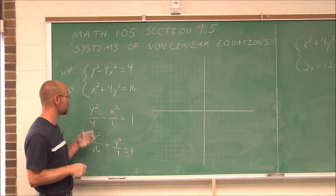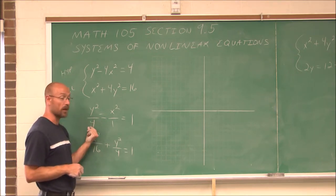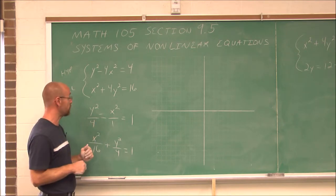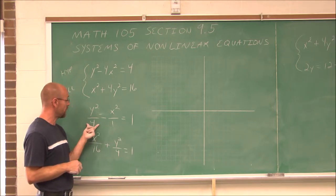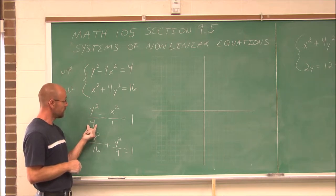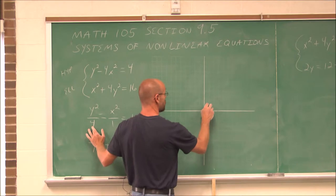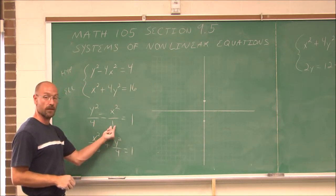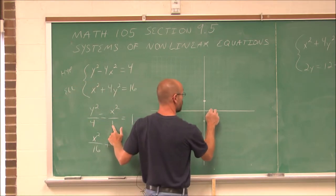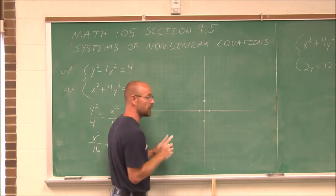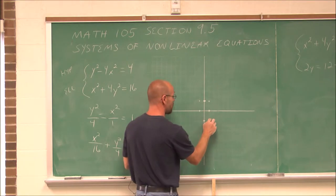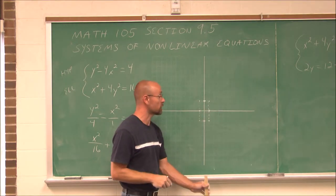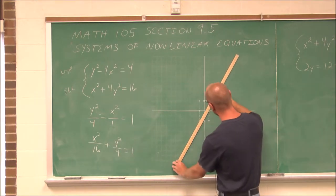Now to graph a hyperbola — and because we're graphing for a solution to a system, we want to be very accurate. For this hyperbola, I recognize the b value: the square root of 4 under y squared is plus or minus 2, so I go plus or minus 2 on the graph. The a value is the square root of 1, which is plus or minus 1. I want to graph the corners — the combination of my a and b points — and draw a rectangle. Because we're graphing for a solution, I'll use a straight edge to draw my diagonals.